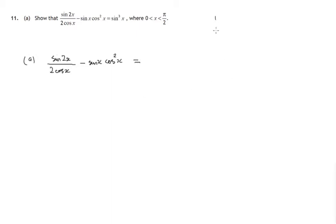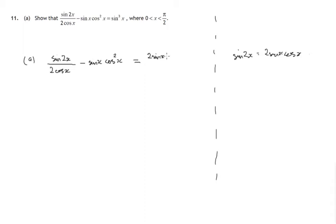The first thing to notice is that we've got a sine 2x, and remember there's a double angle formula: sine 2x is 2 sine x cosx. That's given to you in your formula sheet. So we can write sine 2x in the form 2 sine x cosx, and that's what's divided by 2 cosx, and we'll have to take away sine x times cos squared x.